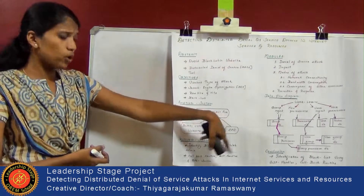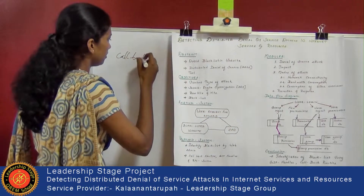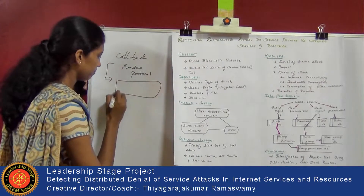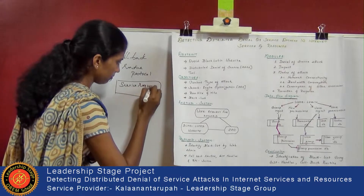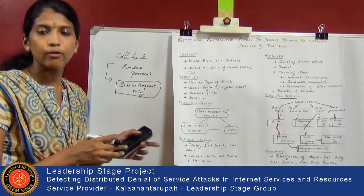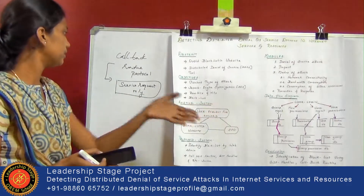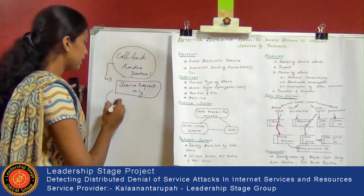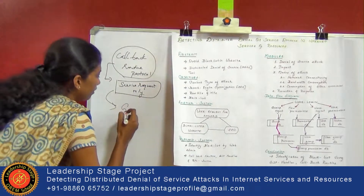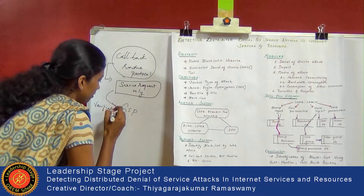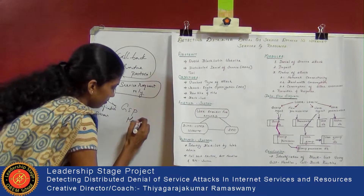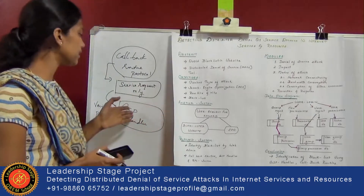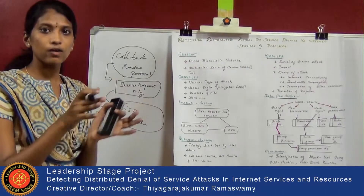This process is done by two methodologies. When any particular user requires any resources in the search engine or browser, the client request is saved in the service request memory, which is present in the callback routing protocol. Then the required request is verified by the GSP handler. If the client request was already present in the data log of the service request memory, then the GSP handler resolves the blacklisted content problem.